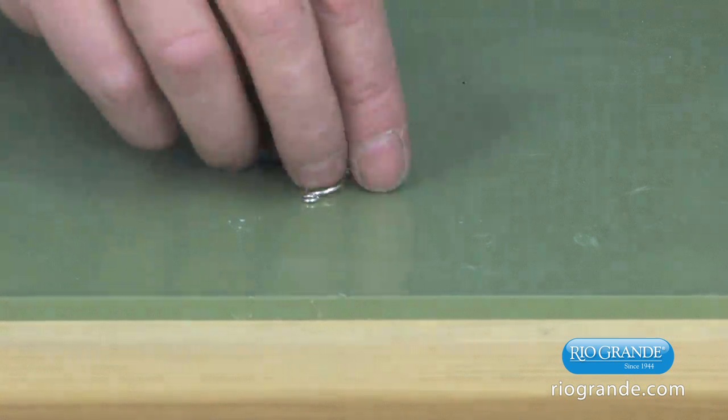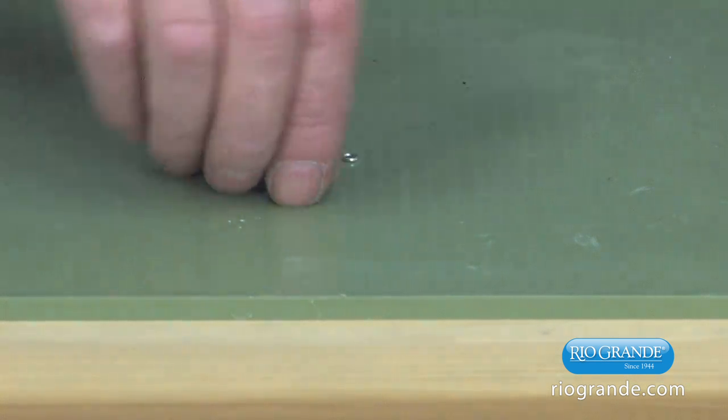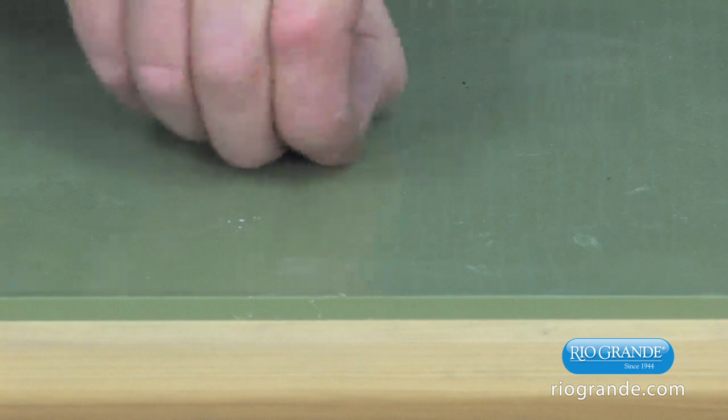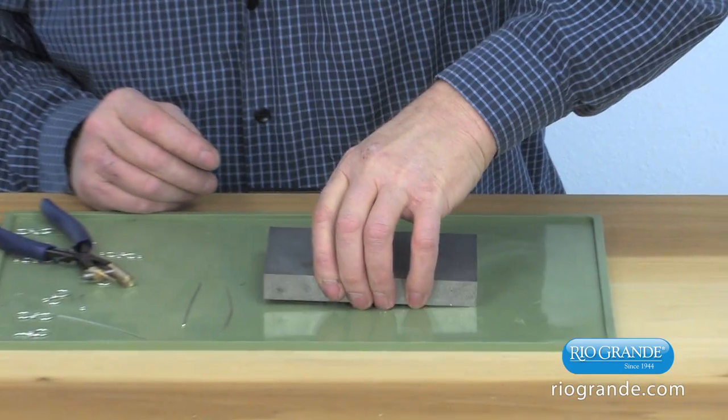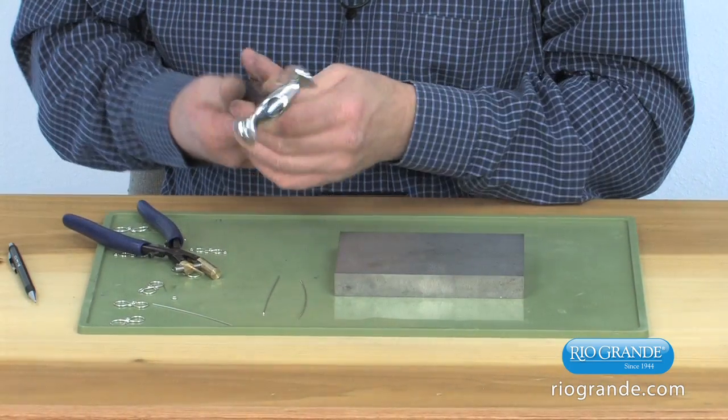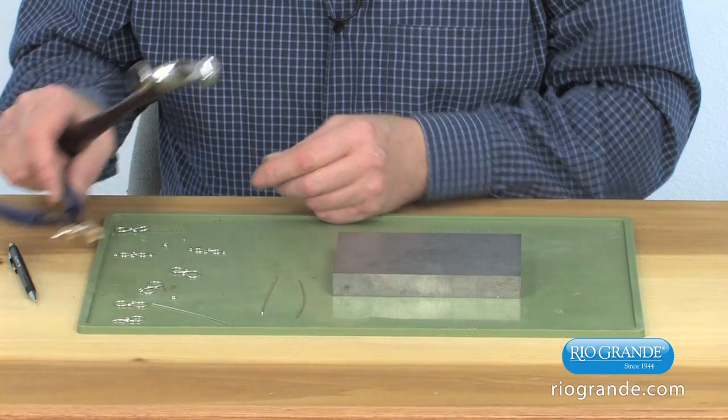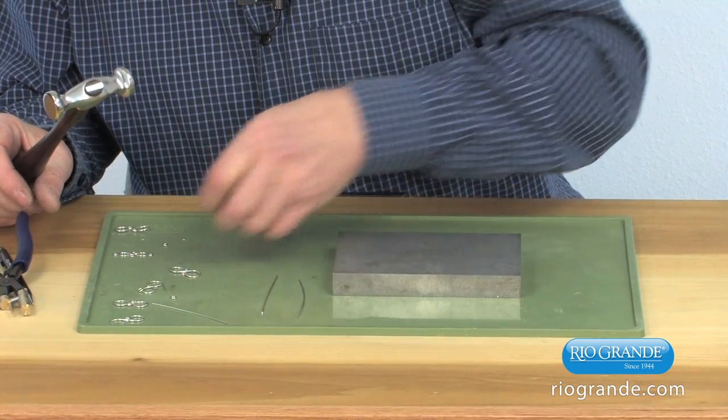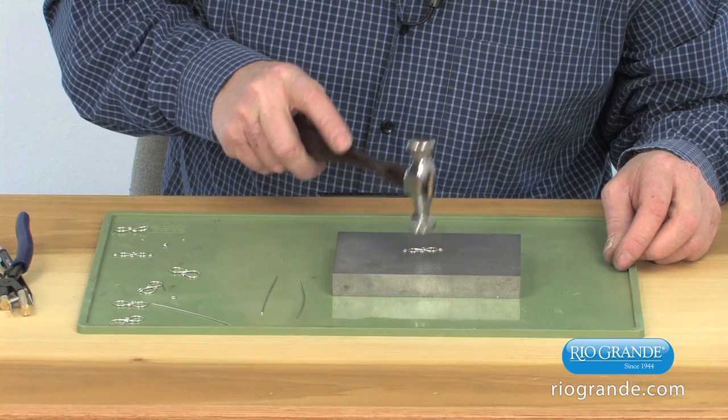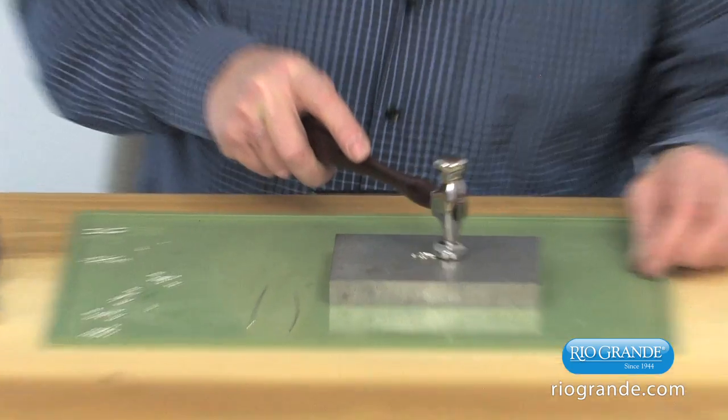Then after I soldered the jump rings on the S-hook, I used a bench block and a Fretz planishing hammer to flatten the S-hook.